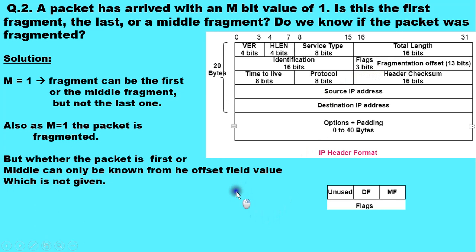Now, in this case, we are provided with the M bit value of 1. The more fragment bit is given as 1. When more fragment bit is set to 1, it means that the packet is fragmented. So obviously, fragmentation was done in this case.